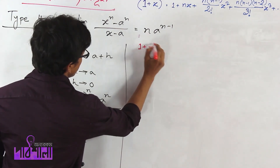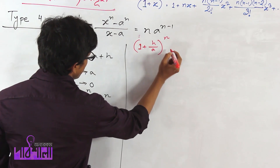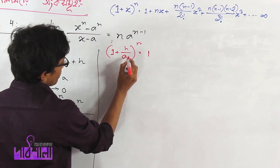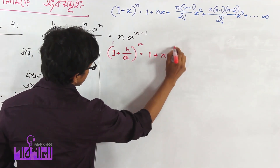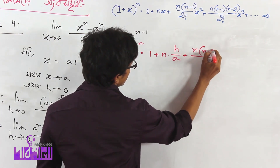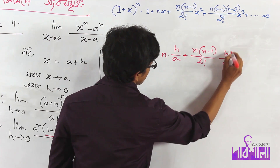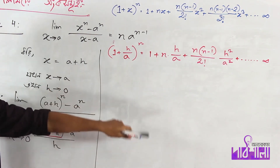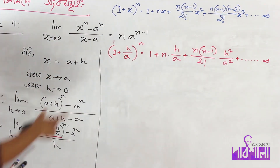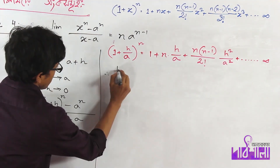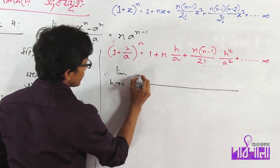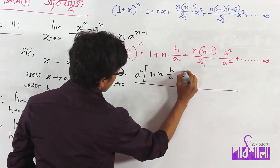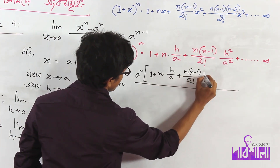Expanding (1 plus h/a) to the power n using the binomial theorem, we get limit h tends to 0 of a to the power n times 1 plus n·(h/a) plus n(n minus 1) over 2 factorial times (h/a) squared, plus dot dot dot, minus a to the power n.